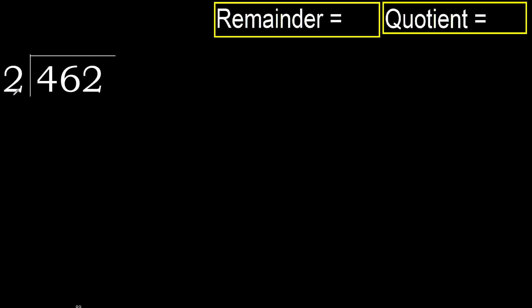462 divided by 2. 4 is not less, therefore with 4. 2 multiplied by which number is nearest to 4, but not greater.